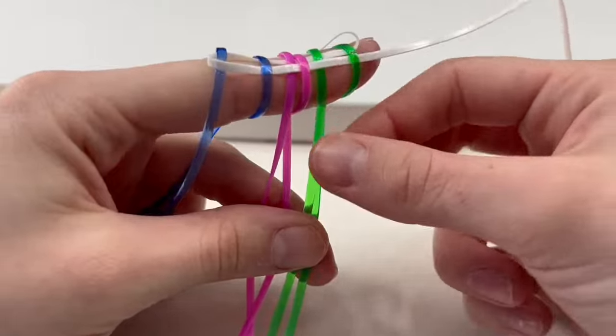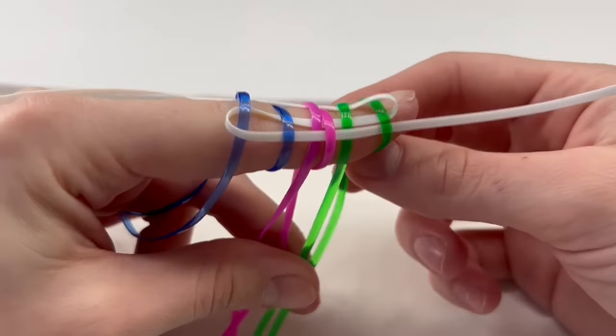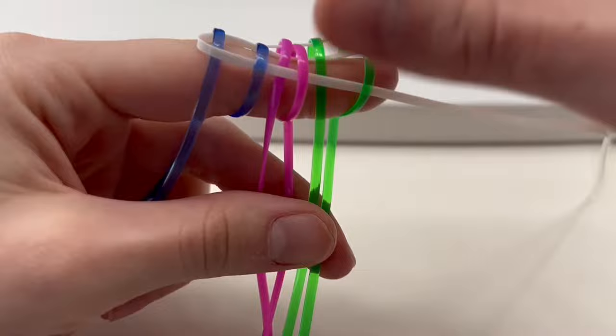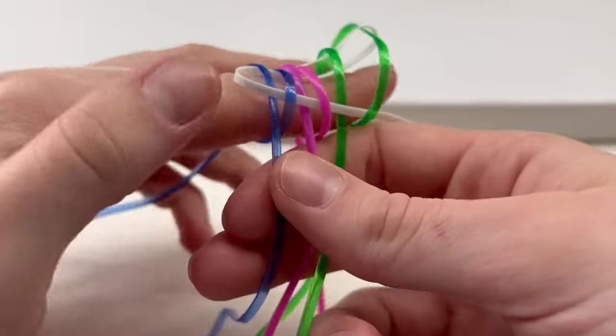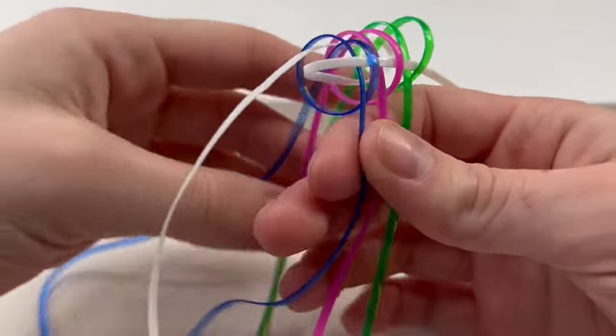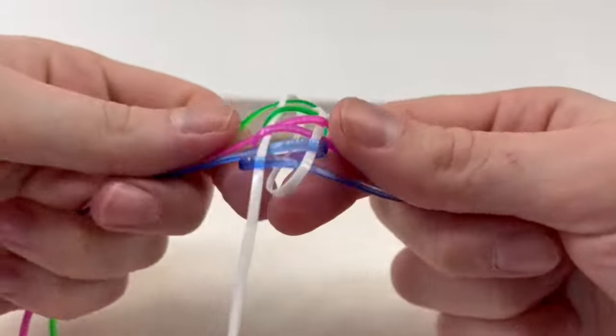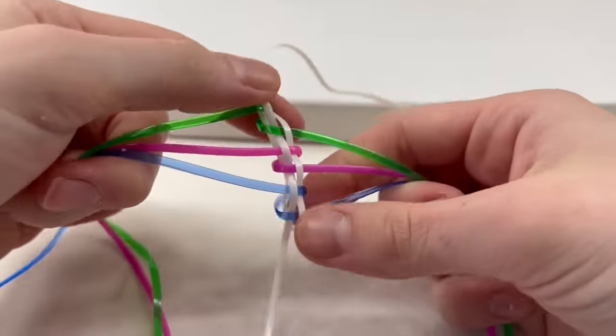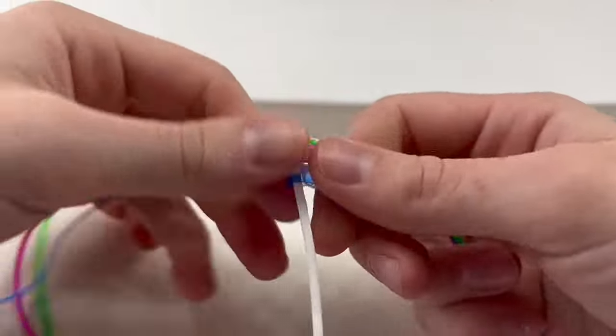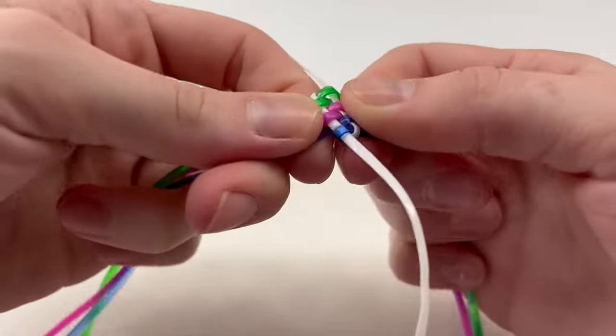So see how our tails on the end are locked in. Now we're ready to take this off our finger. So you're just going to loosen your tension. And then keeping the strands on their side, pulling tight. And there you have your base.